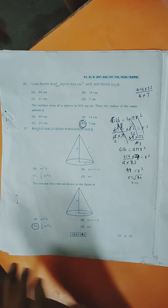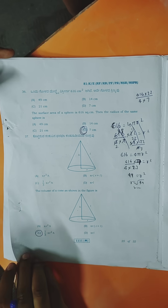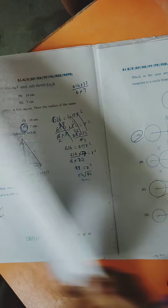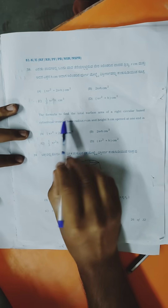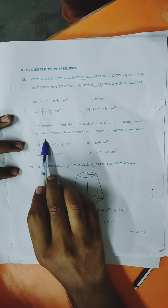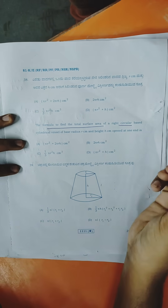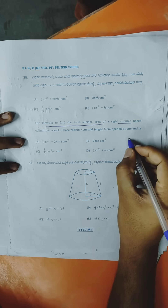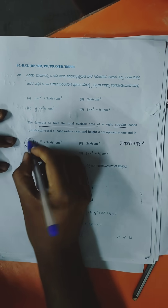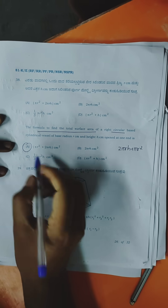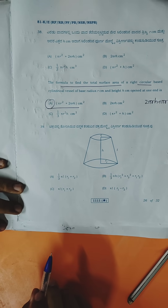Thirty-seventh question: volume of a cone — direct formula is (1/3)πr²h. Thirty-eighth question: formula for total surface area of a right circular cylinder. Total surface area = 2πrh + πr². So option A is the right answer for total surface area of a cylinder.